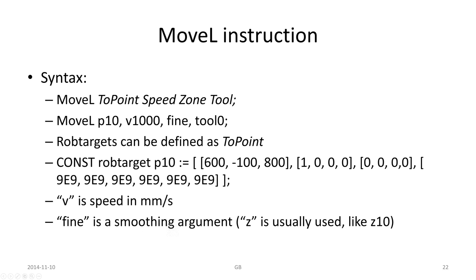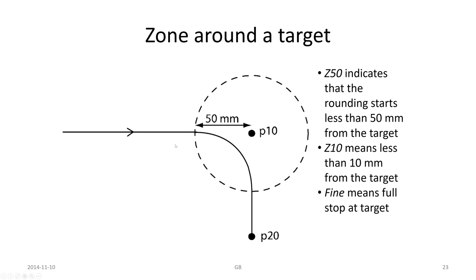Fine is a smooth argument. If we would like to move over to the next target point, we can have another value than fine — we can have Z50, for example. That indicates that there is a rounding factor, so it starts moving to the next target when it comes 50 mm to the target P10 and moves to P20. If it were Z10, it means that 10 mm away from P10, it will start to move over to P20.